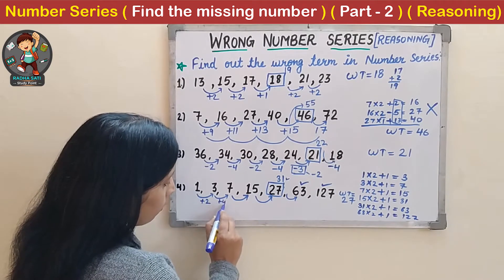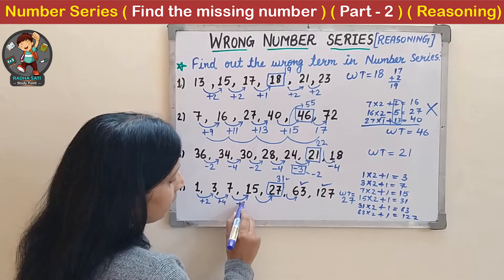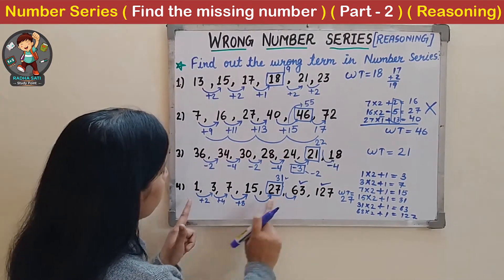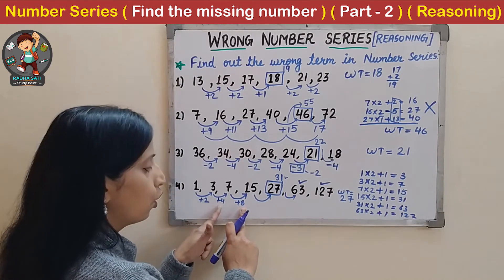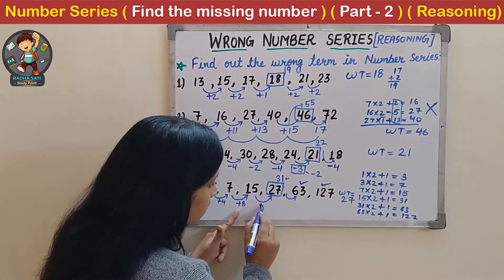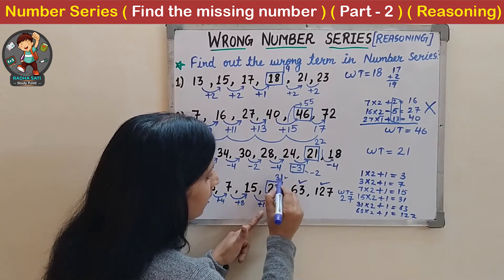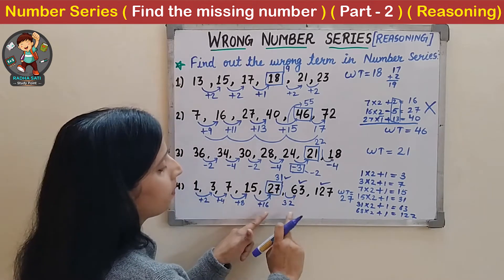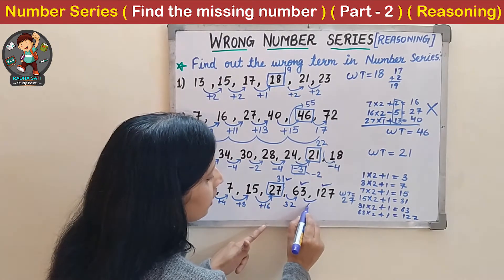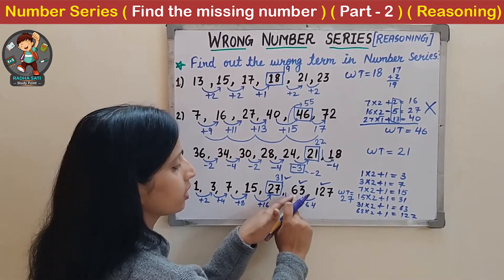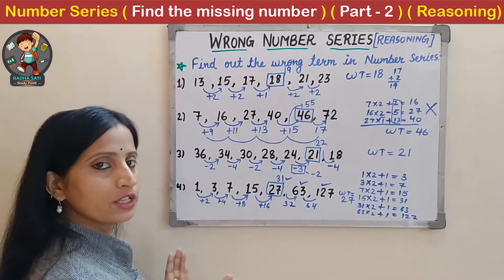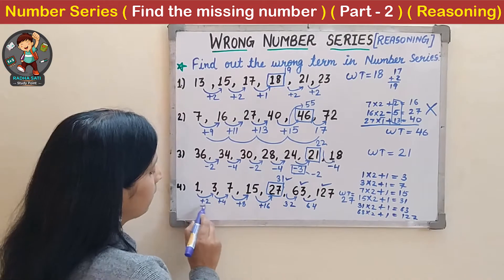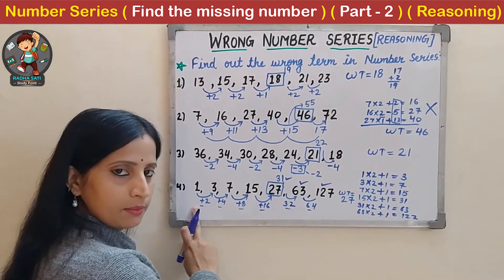In this alternate method: 3 plus 4 gives 7, then 7 plus 8 gives 15. Every time the numbers being added are getting doubled: 2, 4, 8. So it should be 16 next: 15 plus 16 again gives 31. Then double of 16 is 32: 31 plus 32 is 63. Then 63 plus 64 is 127. So we can solve this number series by either method - each time the added numbers are doubling.